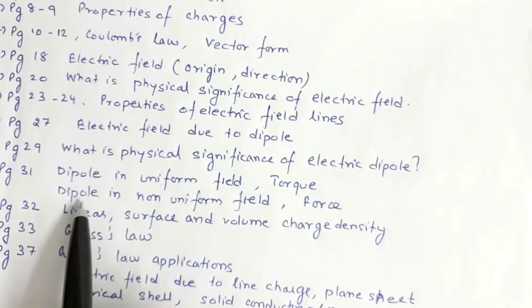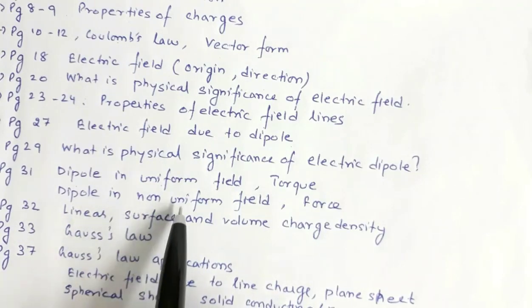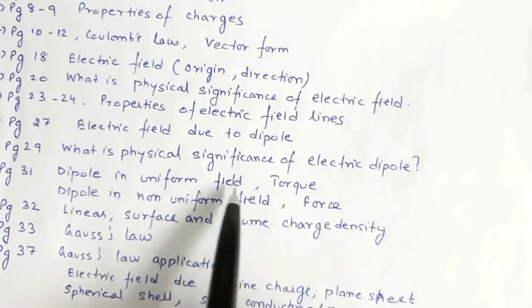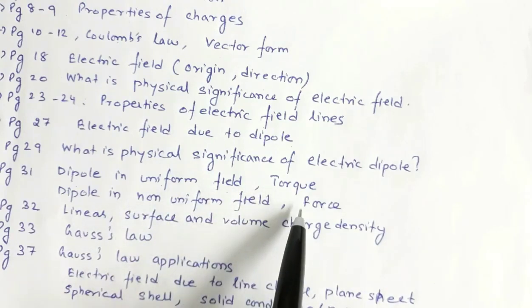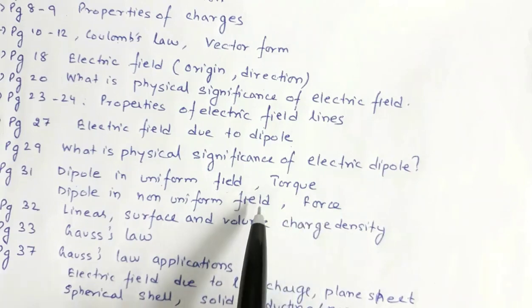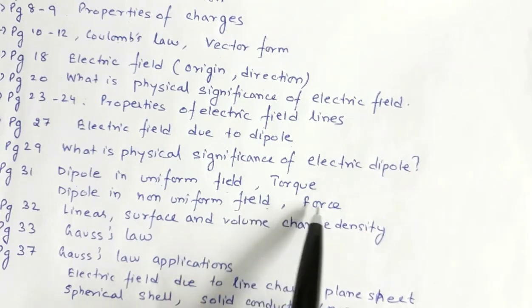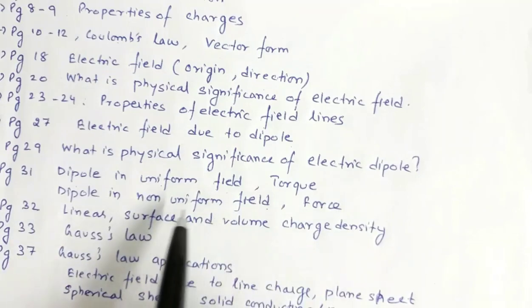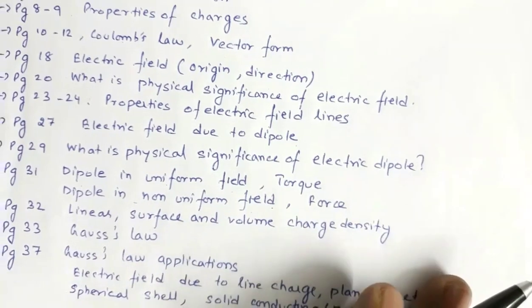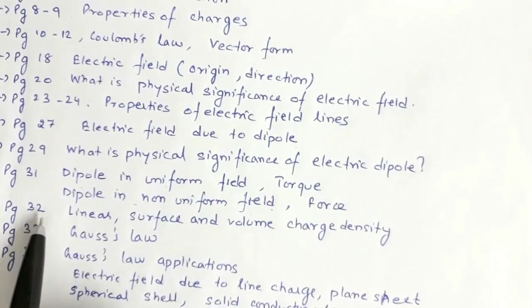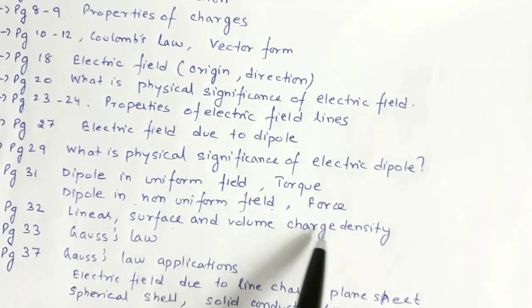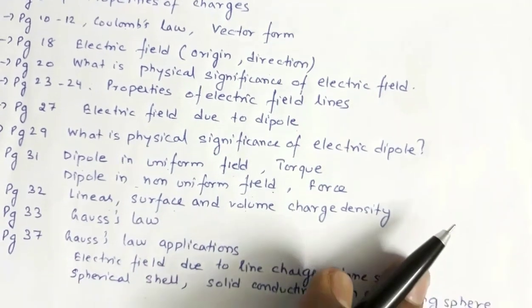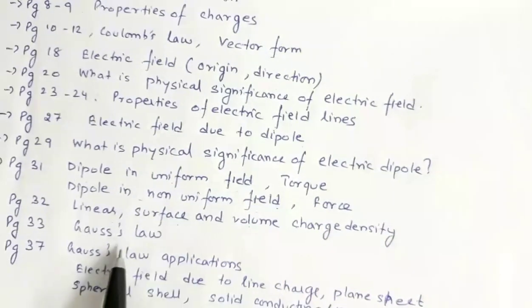You have to read the NCERT textbook on this item. Dipole in non-uniform field. Uniform field has torque and force is zero. If it is non-uniform field, then force is not zero. Page 32. Linear charge density, surface charge density, volume charge density. Gauss law, very important.